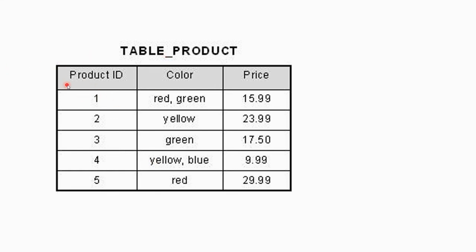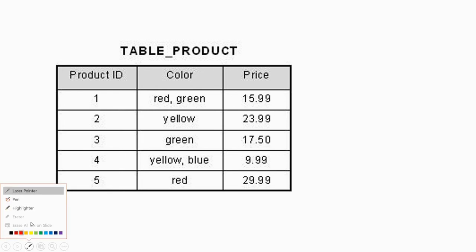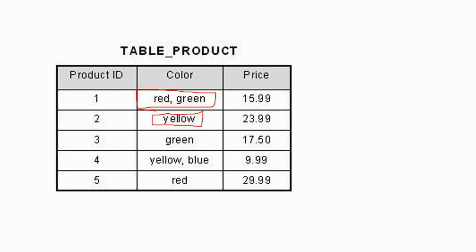Here is a product table with three columns: product ID, color, and price. You can see that in a single cell there are two values entered with a comma. A cell with only one value is atomic, but having two values in one cell violates the first normal form — this table is not structured, and this is where a repeating group appears.